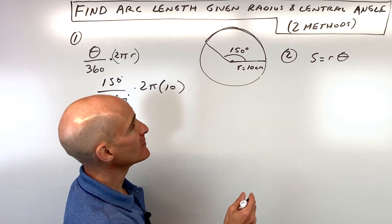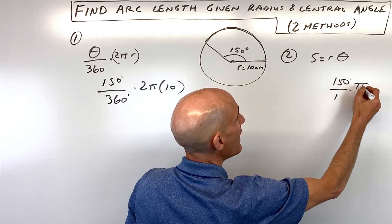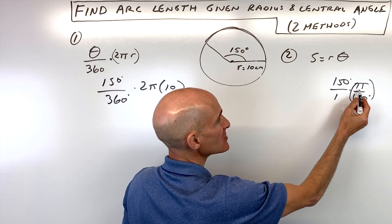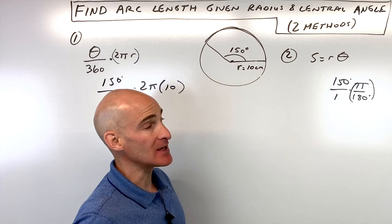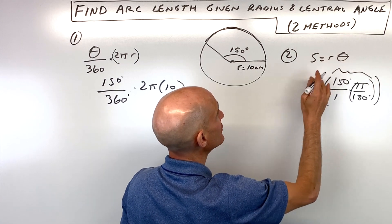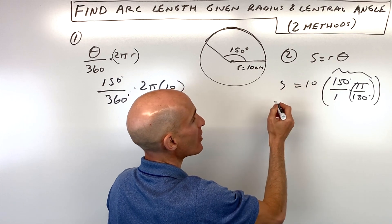We convert 150 degrees into radians by multiplying by π over 180. There's 180 degrees for every π radians. Multiplying the central angle times the radius, which is 10 centimeters, gives us the arc length.